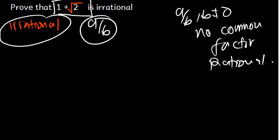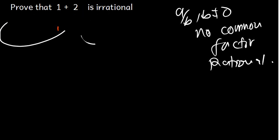We know that the square root of 2 is irrational, so we need to make the square root of 2 the subject of the formula. We then check: if there are no common factors, the expression is rational.